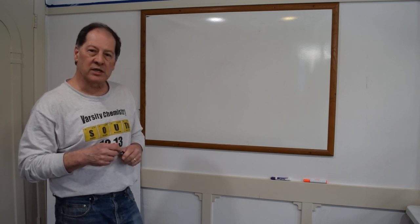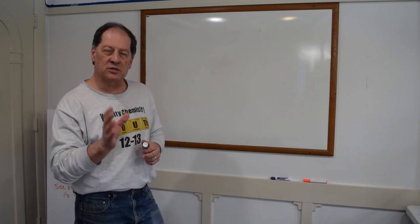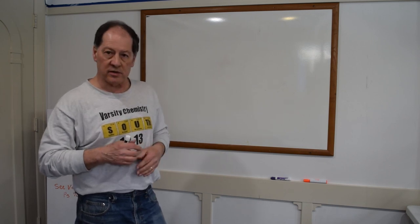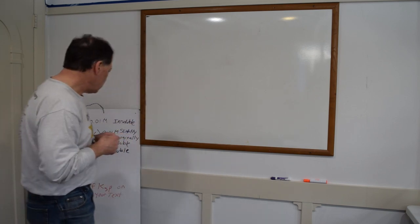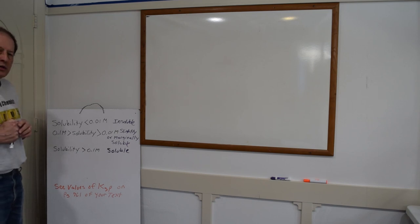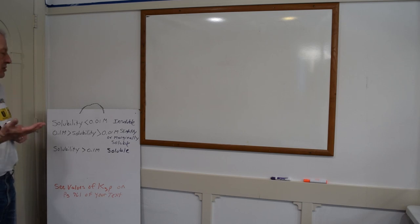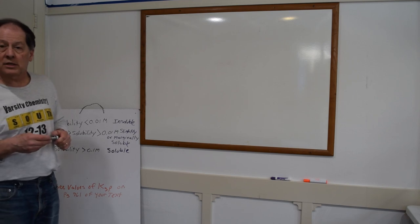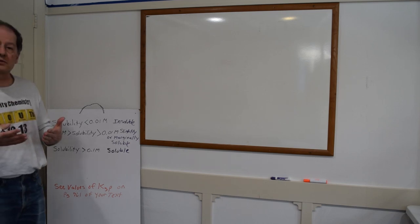Today we're going to talk a little bit about solubility. If you remember way back in chapter four, we talked about solubility and I told you to just use the solubility rules black and white — either soluble or insoluble. Well, things are a little bit more complicated. If the solubility of a substance is less than 0.01 molar, we generally consider that insoluble. If the solubility is between 0.01 and 0.1 molar, we call that slightly soluble or marginally soluble. And if something is soluble, it just means it has a solubility greater than 0.1 molar.